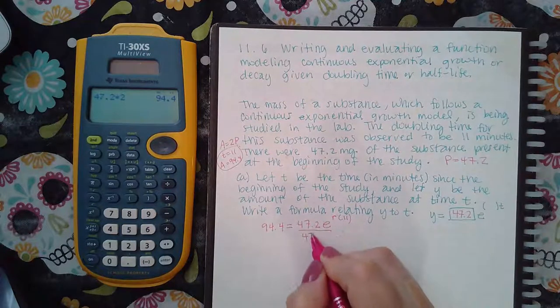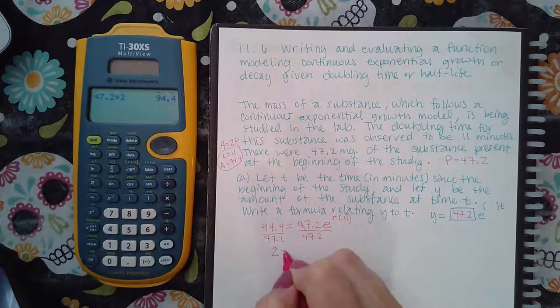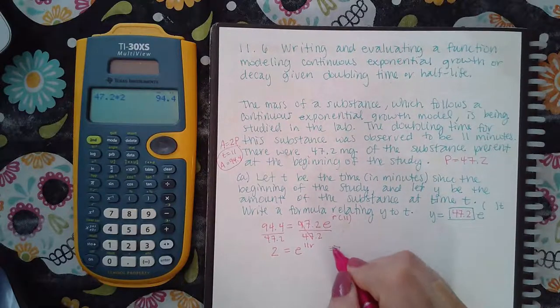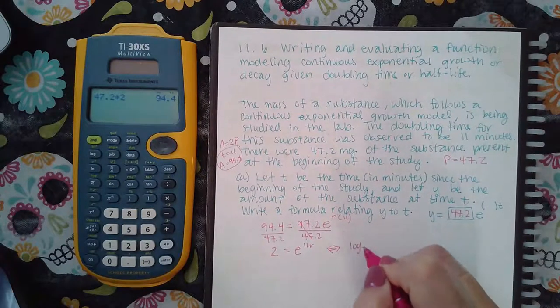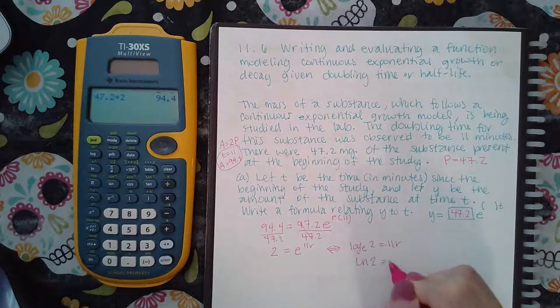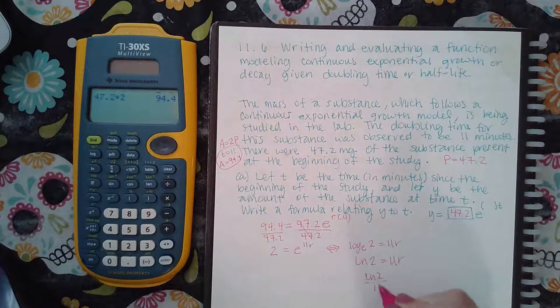So if I divide by 47.2, I'm going to get that 2 because it's doubled. And here I have 11R. So if I switch the form over, I'm going to get log base E of 2 equal to 11R, or ln of 2 equal to 11R, or ln of 2 over 11 equal R.